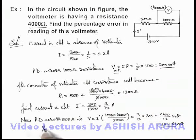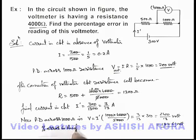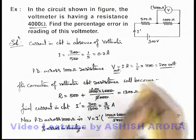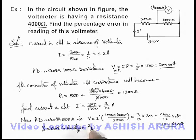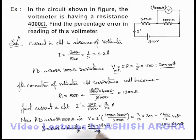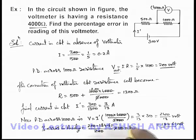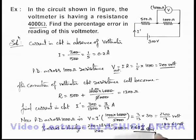Now we calculate the percentage error in the reading. The actual value is 200 volts, and the voltmeter reads approximately 184.61 volts. Percentage error = (200 − 184.61) / 200 × 100. On simplification, the result is 7.69 percent. This is the answer to the problem.